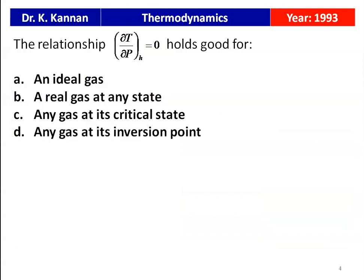In this lecture, the first question from the 1993 question paper: the relationship ∂T/∂P at constant enthalpy equal to 0 — it holds good for: (a) an ideal gas, (b) a real gas at any state, (c) any gas at its critical state, (d) any gas at its inversion point.